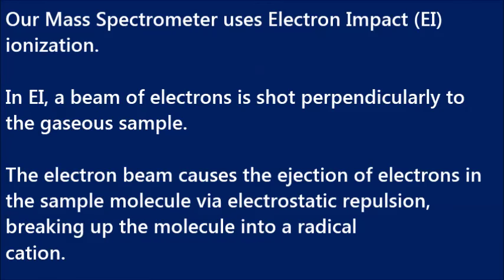Our mass spec is EI positive ionization, so it's electron impact ionization. The way electron impact works is that a beam of highly energized electrons are emitted from a filament, and the electron's path is perpendicular to the path of the gaseous molecules. As electrons move closer to the molecules, the molecular electrons are ejected from the electron cloud due to electrostatic repulsion.